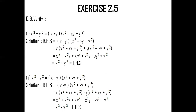First, x gets multiplied with the bracket, that is x square minus xy plus y square, and then plus y also gets multiplied with the bracket, x square minus xy plus y square. As you can see in the fourth line of the solution for the first question, I am getting x cube minus x square y plus x y square plus x square y minus x y square. On simplification, minus x square y and plus x square y get cancelled out. Similarly, x y square and minus x y square also get cancelled out. So I am left with x cube plus y cube, which is actually my LHS.